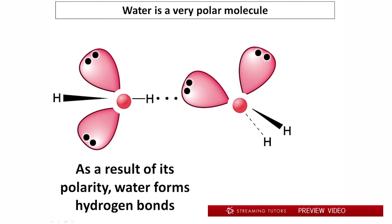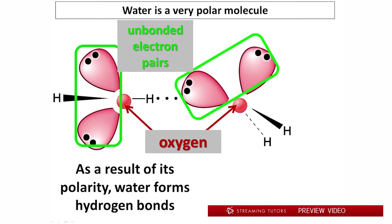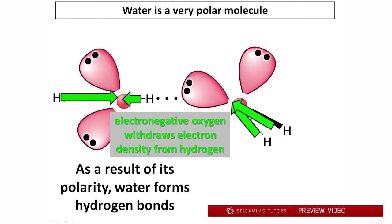So here are two water molecules. Water molecules are polar, as we've said. Here are the two oxygens in the molecule. So this is a slightly simplified diagram compared to the one you saw a moment ago. Here are the unbonded electron pairs that you saw again a moment ago.